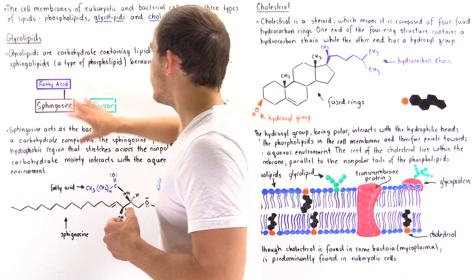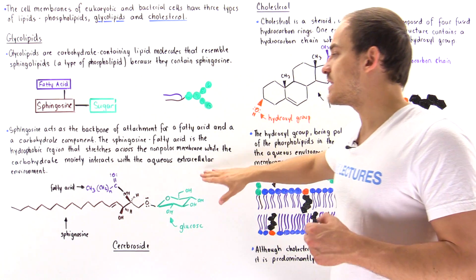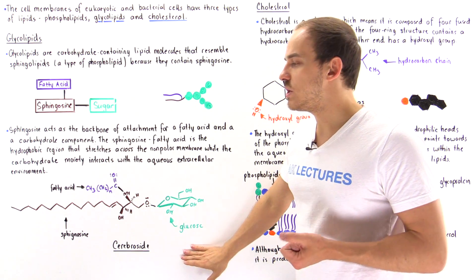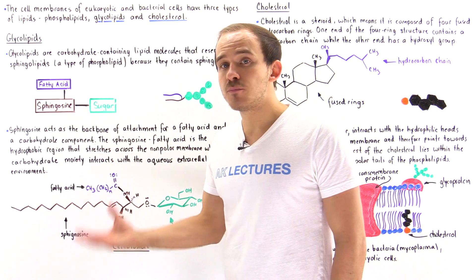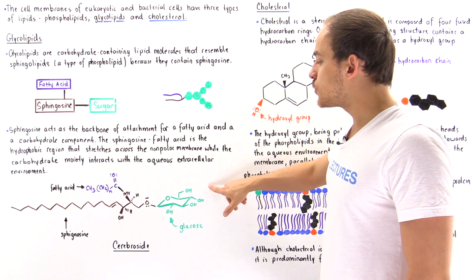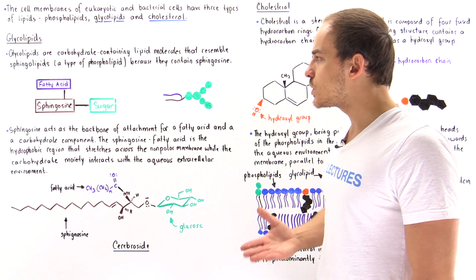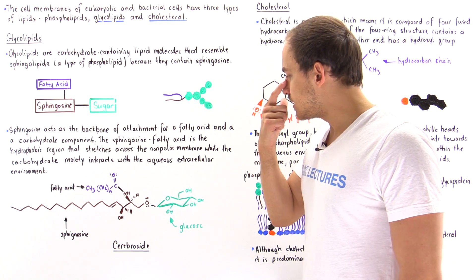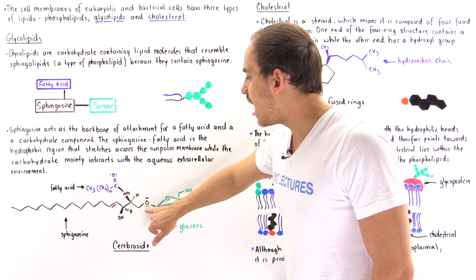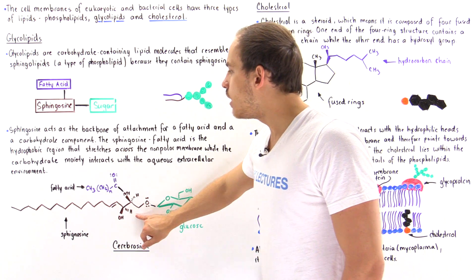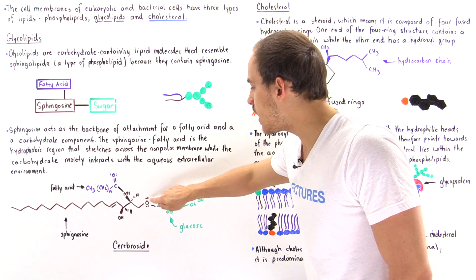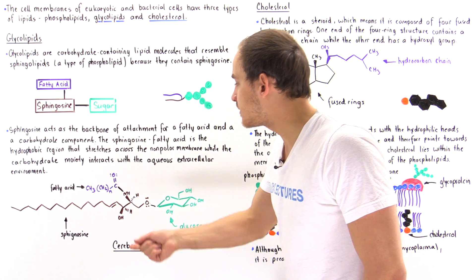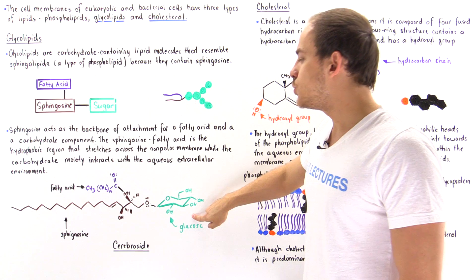The carbohydrate moiety of this glycolipid will interact with the aqueous extracellular environment. The simplest type of glycolipid, shown in this diagram, is known as a cerebroside. In a cerebroside, the sugar molecule is either glucose or galactose — we only have a single sugar moiety. The sugar molecule is attached at this carbon position to the primary alcohol of the sphingosine shown in brown, via a glycosidic bond.